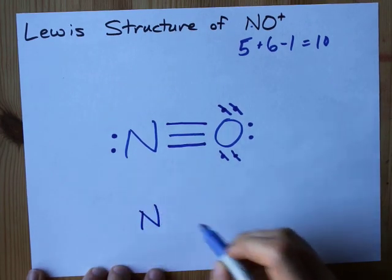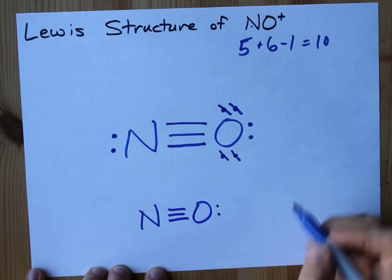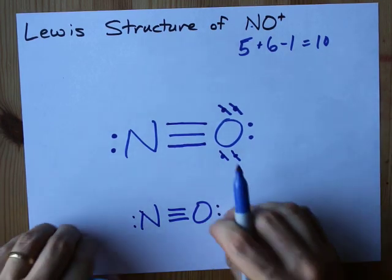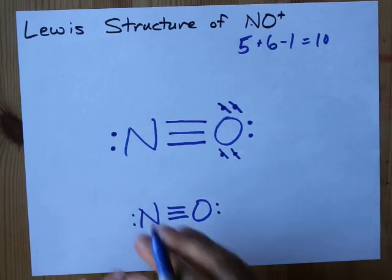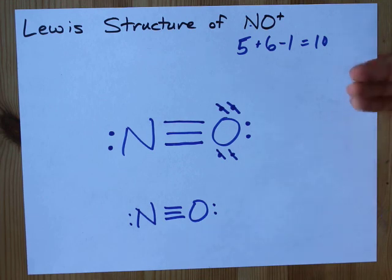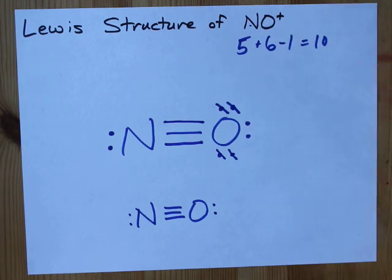And so my final structure here is an N triple bonded to an O, one lone pair on the oxygen, one lone pair on the nitrogen, and this is it. This should remind you of the Lewis structure of carbon monoxide, because carbon monoxide, CO, also has 10 electrons.